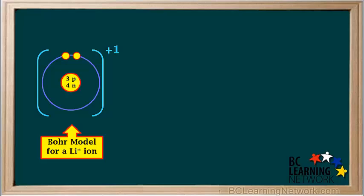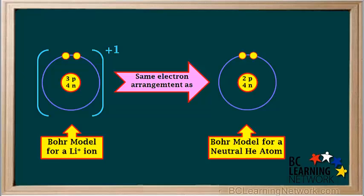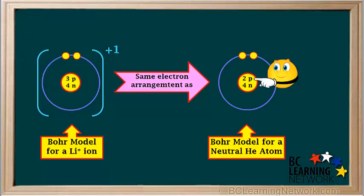So here's the finished Bohr model for a Li+ ion, or Li+ cation. Notice the Bohr model for a Li+ ion has the same electron arrangement as the model for a neutral atom of the noble gas helium. When elements in groups one to two and groups thirteen to seventeen on the periodic table form ions, they do so in order to achieve the stable electron arrangement of a noble gas. We can easily tell the difference between a lithium+ ion and a neutral helium atom because the Li+ ion has three protons and two electrons, whereas the neutral helium atom has two protons and two electrons.